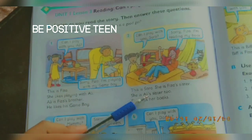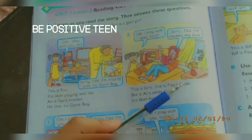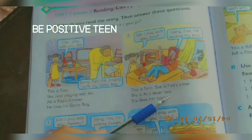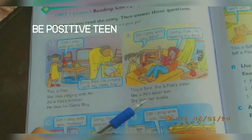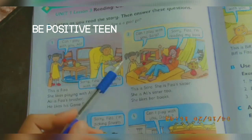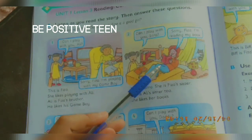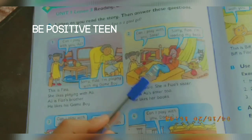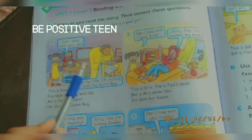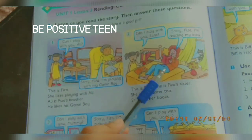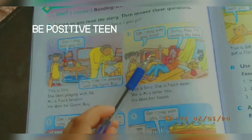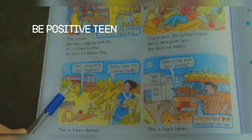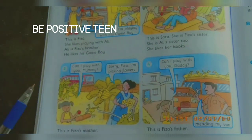This is Sarah. She is Fizza's sister. She is Ali's sister too. She likes her books. Sarah is Fizza's sister, Ali's sister too, and she likes her books.